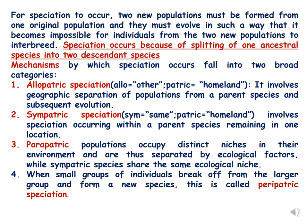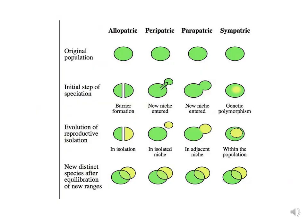In this picture you can see that in allopatric speciation there is an original population, then a geographical barrier occurs which separates the two populations, then reproductive isolation happens, and these two populations are unable to interbreed with each other and form two new different species.